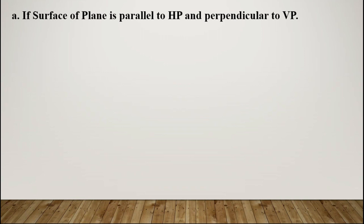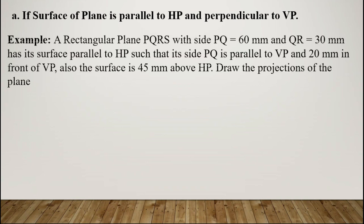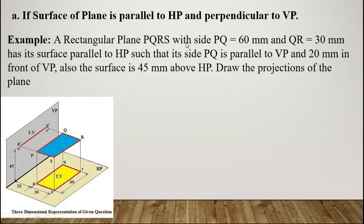Let us take an example. A rectangular plane PQRS with side PQ = 60 mm and QR = 30 mm has its surface parallel to HP such that its side PQ is parallel to VP and 20 mm in front of VP. Also, the surface is 45 mm above HP. Draw the projections of the plane. The surface is parallel to HP and perpendicular to VP.